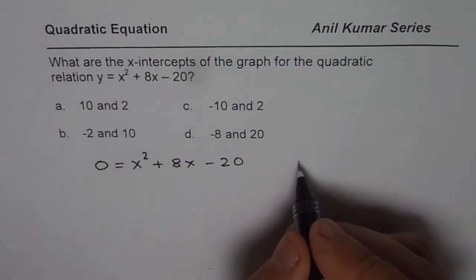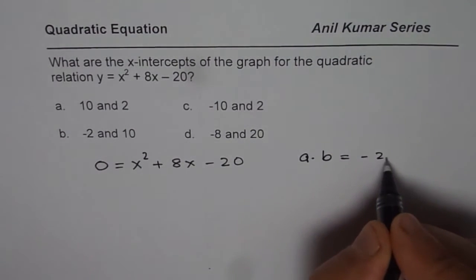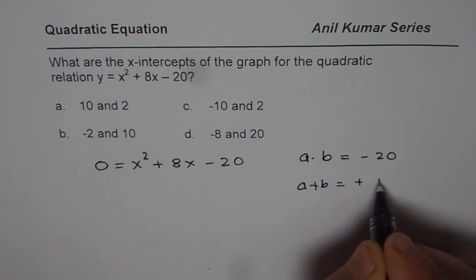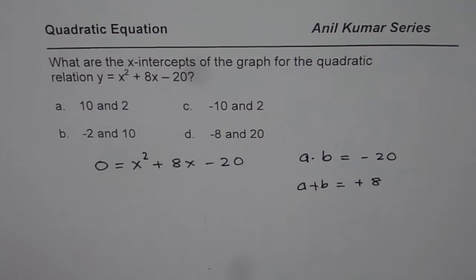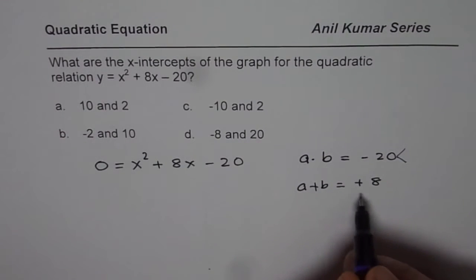To factor this equation, we are looking for two numbers, let's say a and b, whose product is -20 and whose sum is +8. Since the product is negative, the two numbers should have different signs. And since the sum is positive, the bigger number should be positive.